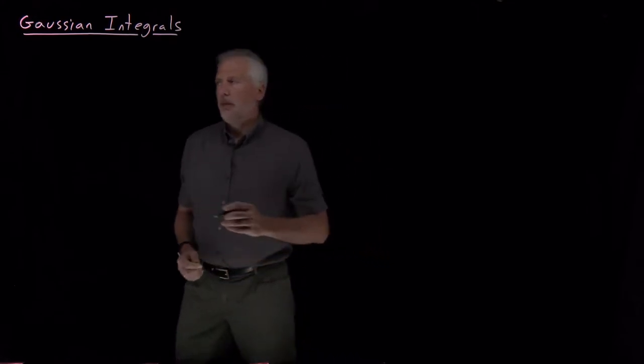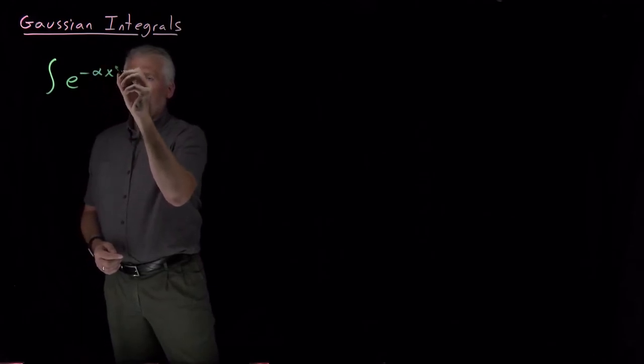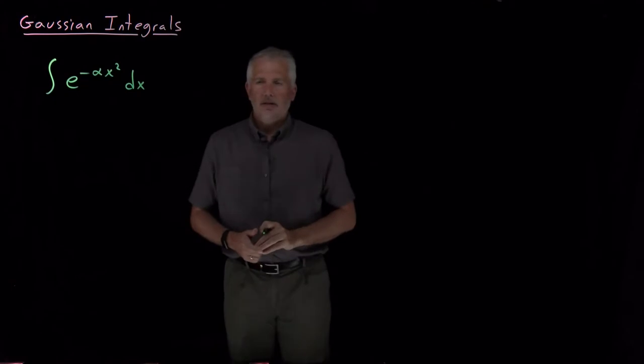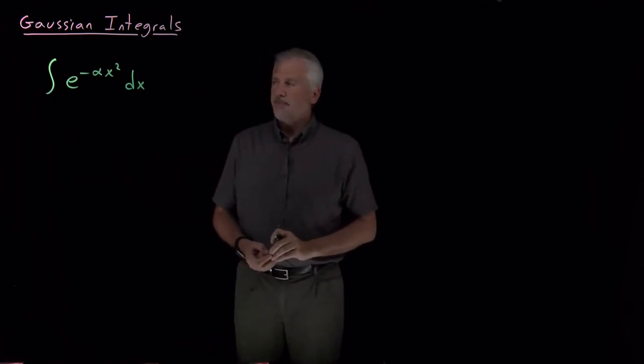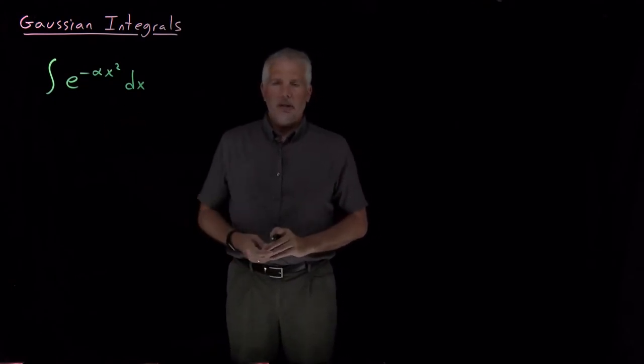One integral that shows up over and over in physical chemistry is an integral of the form e to the minus x squared with perhaps some constant up in the exponent. This is an integral that doesn't yield to normal techniques, normal integrals that you've memorized the answer to or use substitution don't work here.